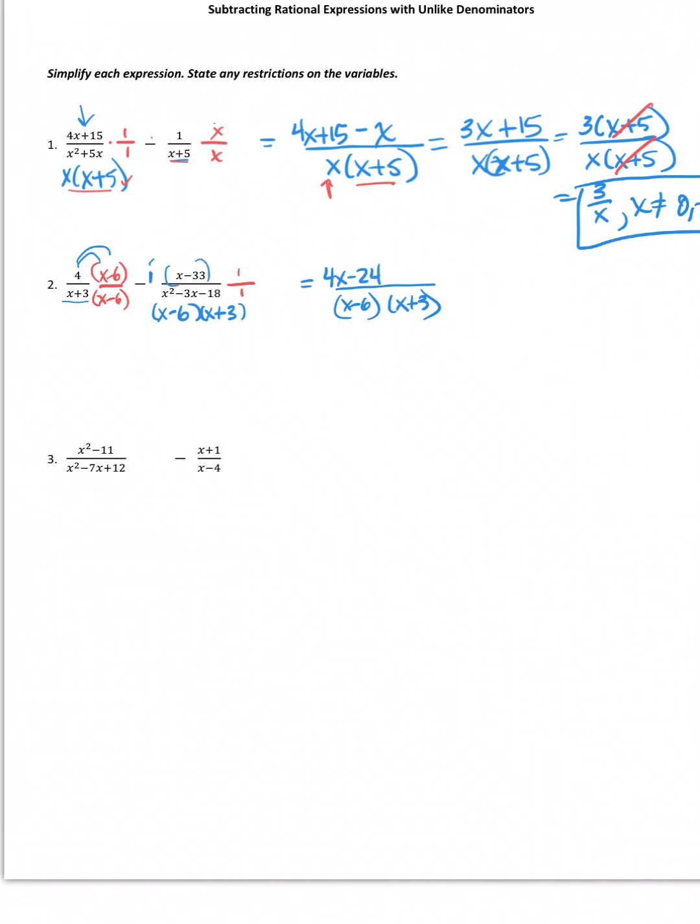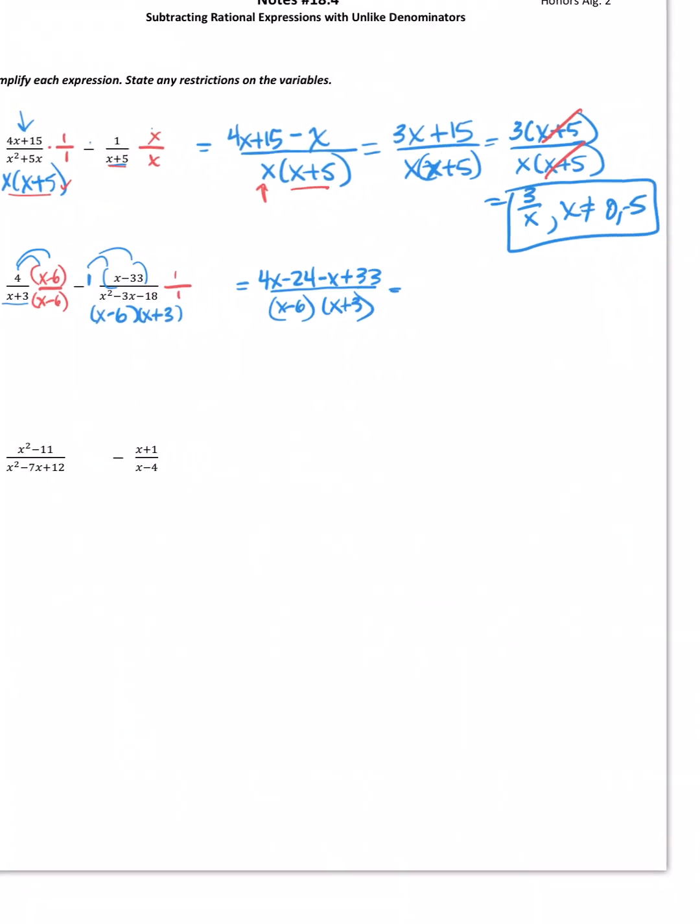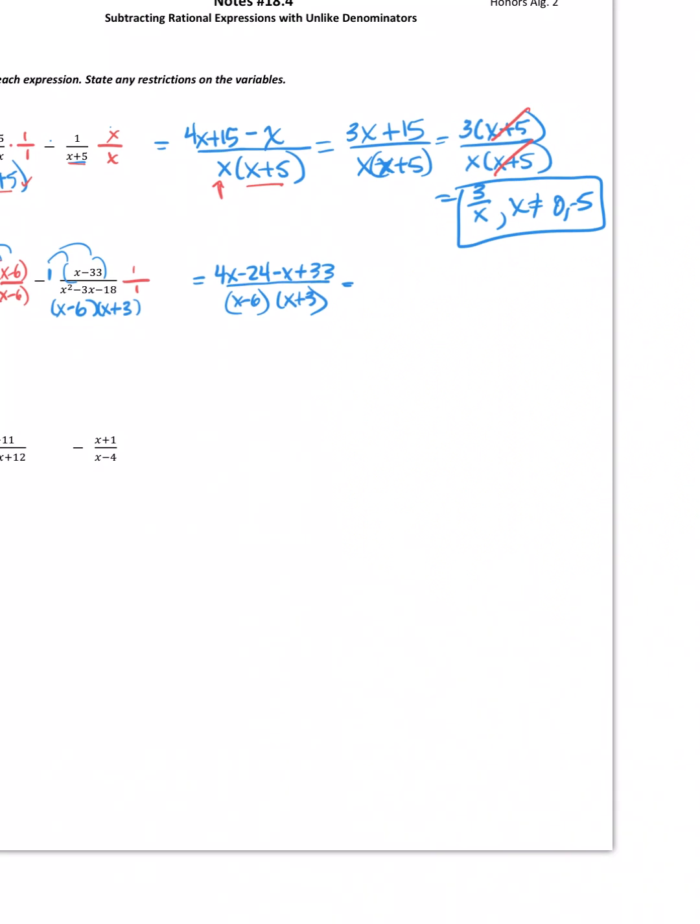Now, remember, there's a minus 1 right here. I need to distribute that negative. So, it would be minus x plus 33. Now, let's clean that up. 4x minus x is 3x. Negative 24 plus 33 is going to be plus 9. On the bottom, I have x minus 6 times x plus 3.